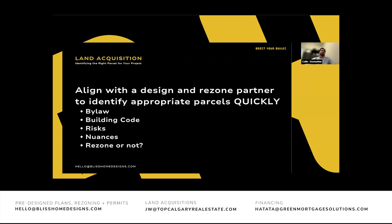You need to align with the design team early. Partner early with experts — the earlier in the process you can involve a design team, the more they'll be able to do for you, like bylaw reviews, building code checks, and helping identify risks in the project. On any property, there are two ways to look at it: what you can currently do, and if you rezone, what you will be able to do. The sooner you align with experts who understand the possibilities, the more they can help de-risk your project and dial in your pro forma.